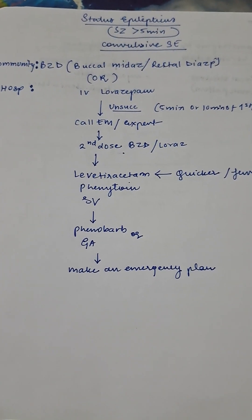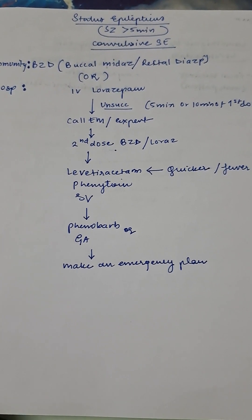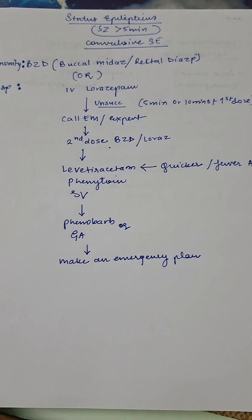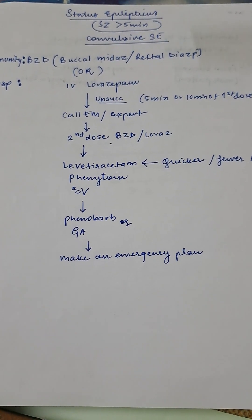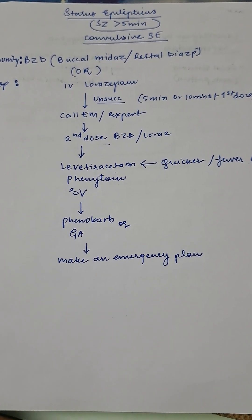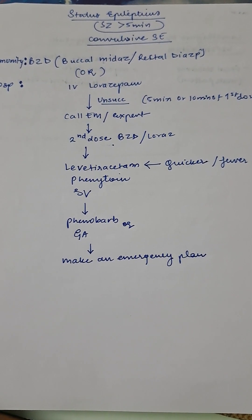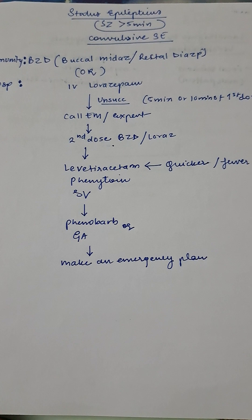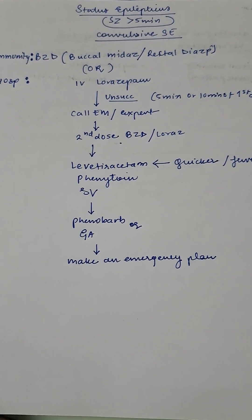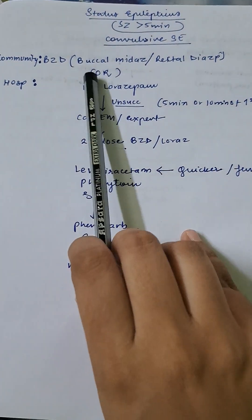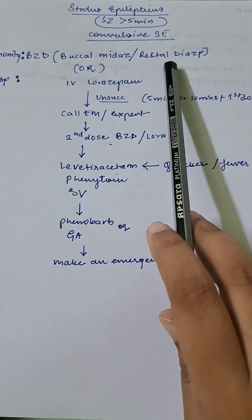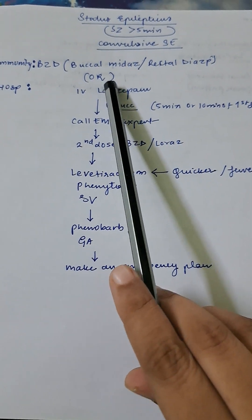Okay, so we'll see how to treat epilepsy as per the NICE guidelines 2022. First, we'll start with status epilepticus. Any convulsive status epilepticus which is more than five minutes needs to be resuscitated immediately at the community or hospital level. At the community level, you'll start with benzodiazepine: buccal midazolam, rectal diazepam, or if there is IV access, IV lorazepam.